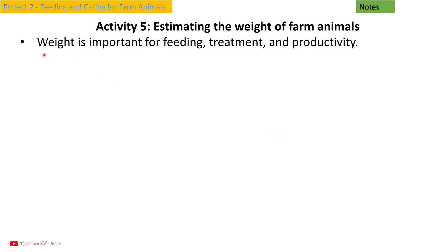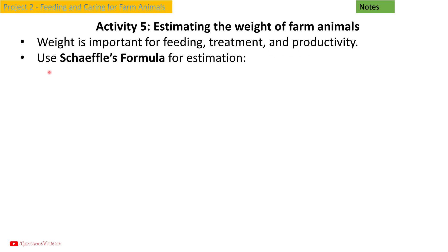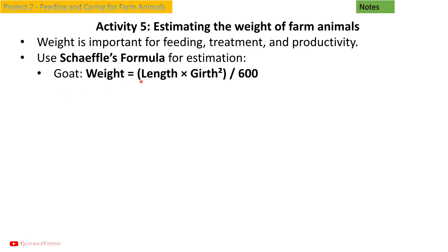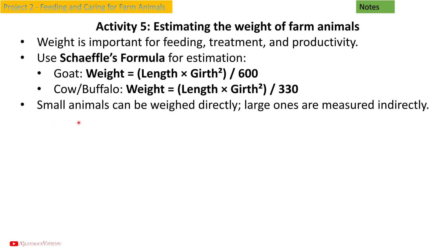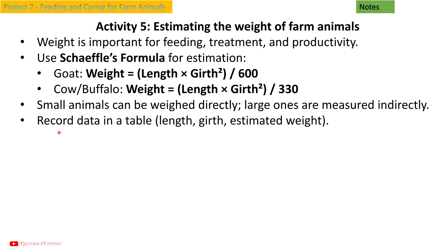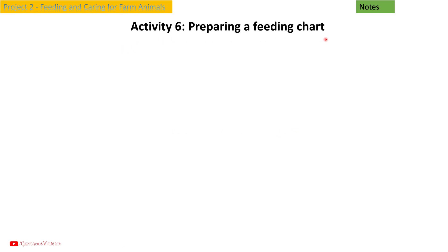Activity 5: Estimating the weight of farm animals. Weight is important for feeding, treatment, and productivity. Use Schaeffer's formula for estimation: goat weight = length × girth² ÷ 600; cow or buffalo weight = length × girth² ÷ 330. Small animals can be weighed directly; large ones are measured indirectly. Record data in a table with columns for length, girth, and estimated weight.